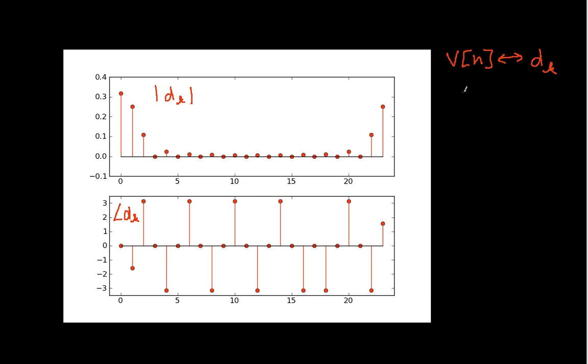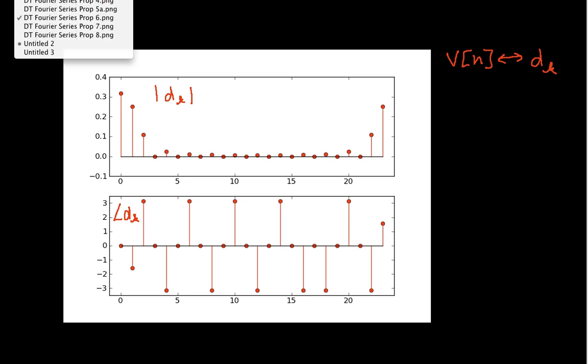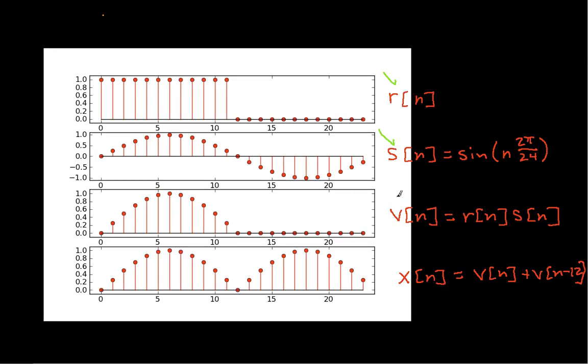And we've computed this so far without actually plugging in a whole time series and using the summation. Isn't that exciting? So the last thing we need to do, we can say this guy is done. So now we need to take V of N, shift it to the right by 12 and add it to V of N.